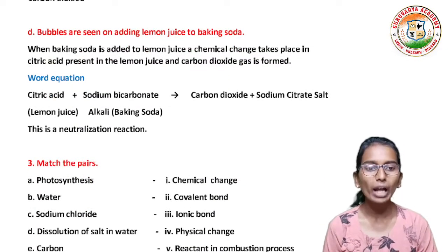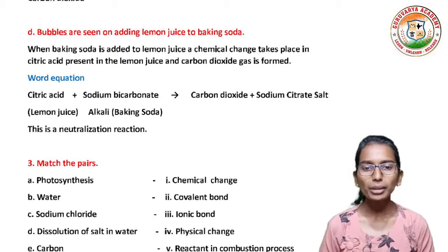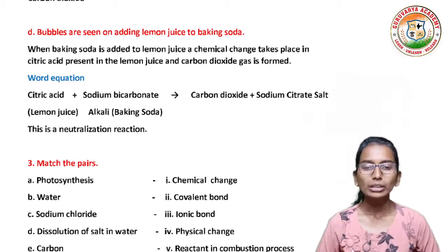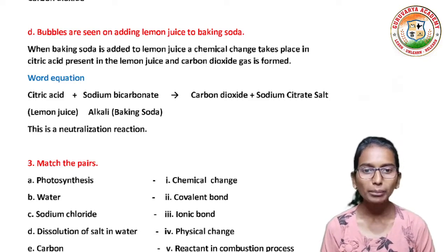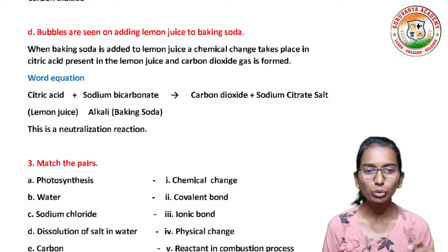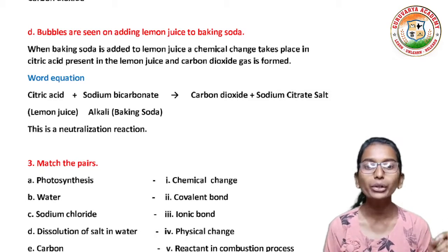Next: bubbles are seen on adding lemon juice to baking soda. A chemical change takes place — citric acid present in the lemon juice reacts with sodium carbonate (baking soda), producing carbon dioxide gas. The word equation: citric acid plus sodium carbonate gives carbon dioxide, sodium citrate salt and water. This is a neutralization reaction.